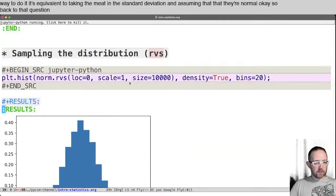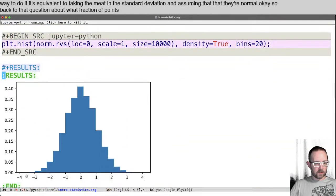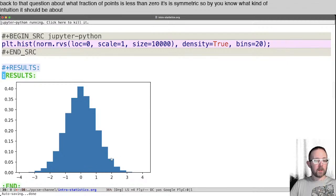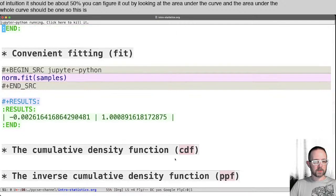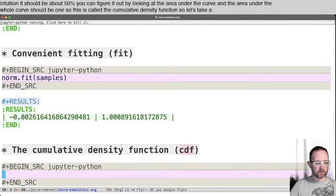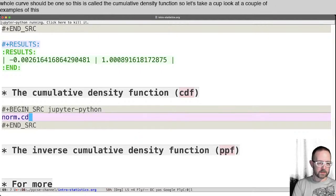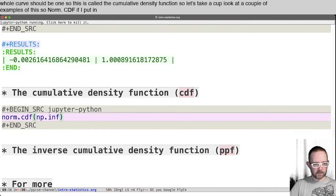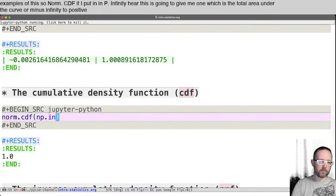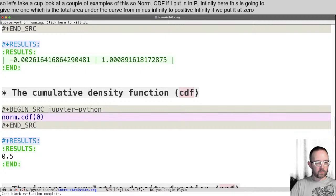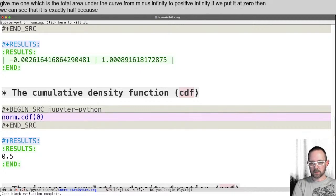Okay. So back to that question about what fraction of points is less than zero. It is symmetric. So by intuition, it should be about 50%. You can figure it out by looking at the area under this curve. And the area under the whole curve should be one. So this is called the cumulative density function. So let's take a look at a couple of examples of this. So norm.cdf. If I put np.infinity here, this is going to give me one, which is the total area under the curve from minus infinity to positive infinity. If we put it at zero, then we can see that it's exactly half because it is symmetric.